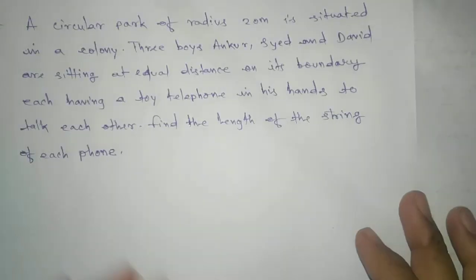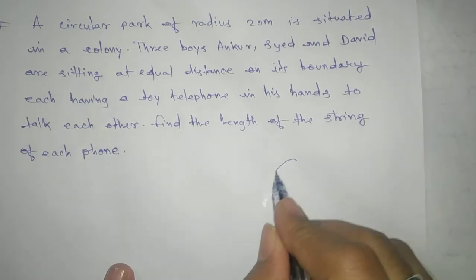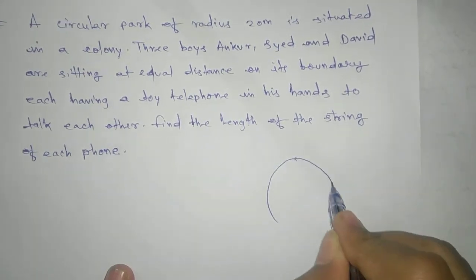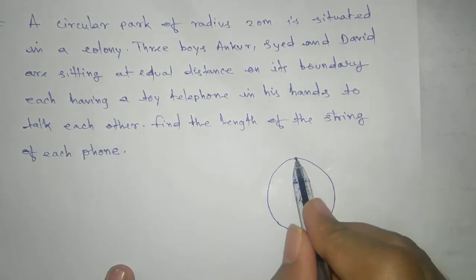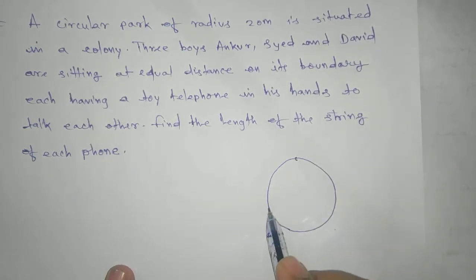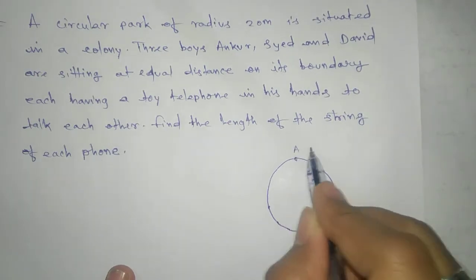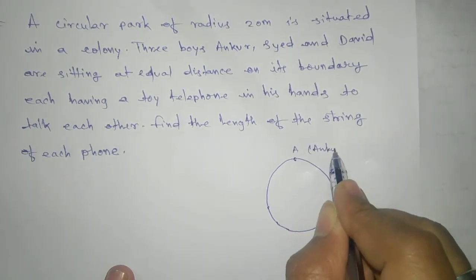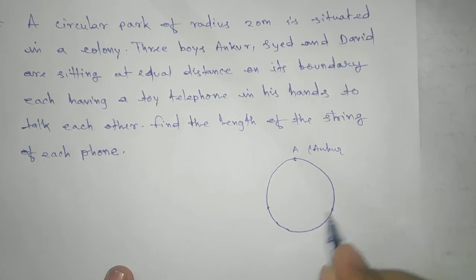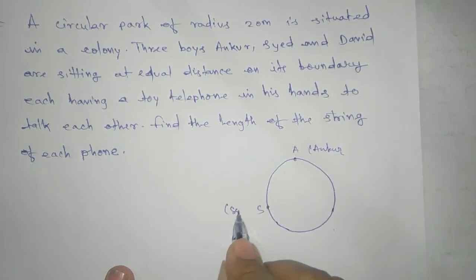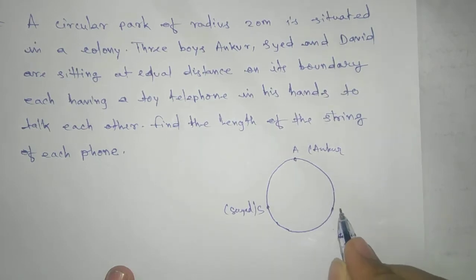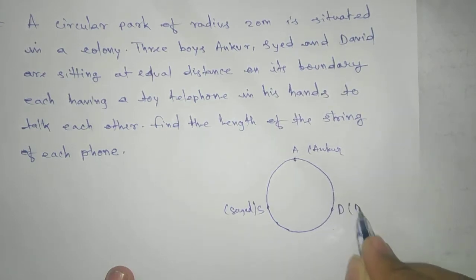Let's draw a diagram. If we draw a diagram, it will be easy for us to understand. We have three positions which are at equal distance. We take A for Ankur, S for Syed, and D for David.